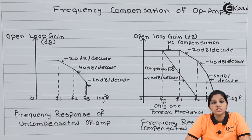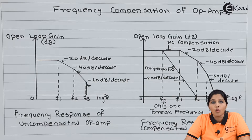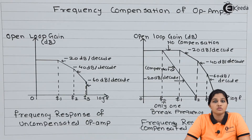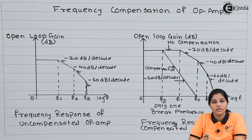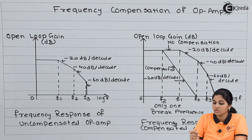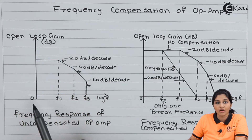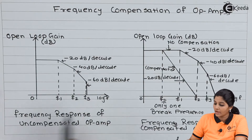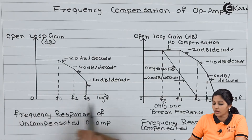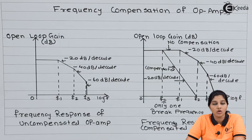Frequency response is basically nothing but the graph between open loop gain of the op-amp and frequency. In the frequency response of op-amp, we are going to consider the open loop gain of op-amp on the y-axis, which is expressed in terms of dB, and frequency on the x-axis, which is taken in the logarithmic scale.